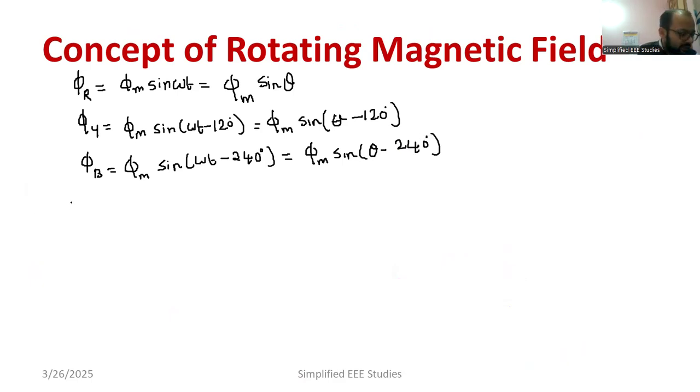By the way, let us calculate the resultant flux Φ_R. Resultant flux is Φ_R. Φ_R is nothing but the vector sum of Φ_R plus Φ_Y plus Φ_B. Kindly call equation number 1.